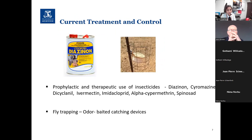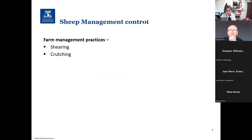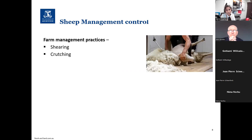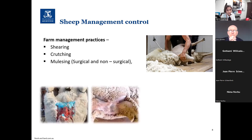Let's see the current treatment and control methods. Treatment is mainly centred around insecticides — there are about six groups currently in use. Fly trapping using odour-baited catching devices can reduce fly populations. Sheep management practices like shearing and crutching reduce susceptibility — shearing removes fleece from the body and crutching removes fleece from the breech area. Mulesing involves removing a section of skin from the perineal region; once healed, the area is devoid of wrinkles and skin folds, greatly reducing faecal contamination of the breech and effectively controlling breech strike.